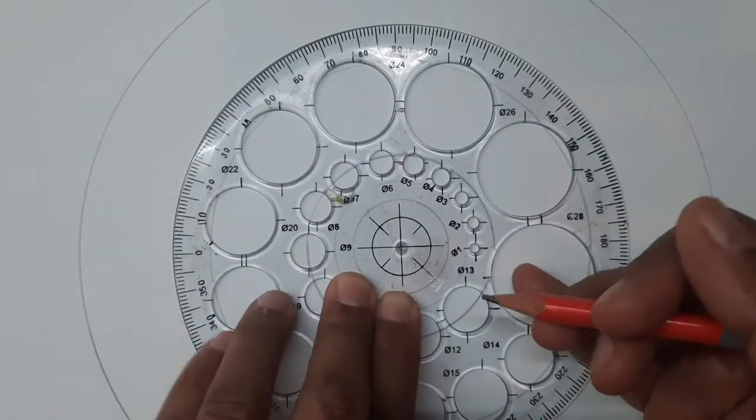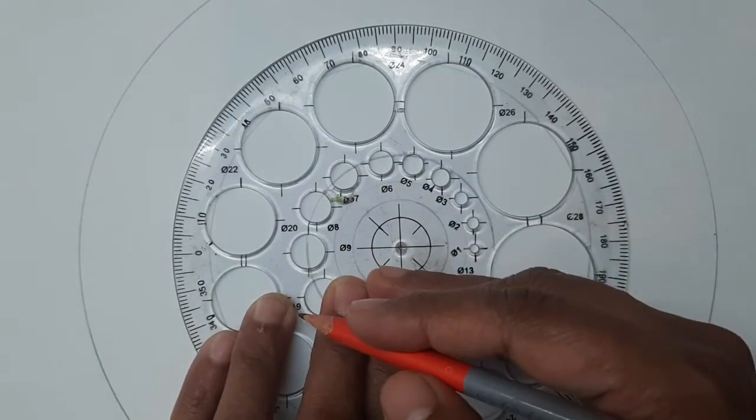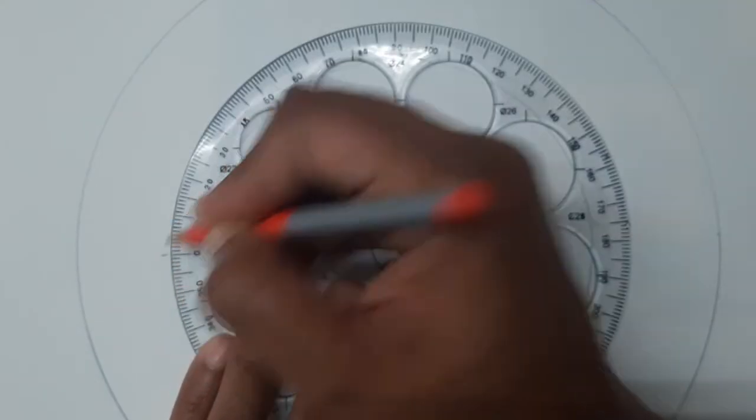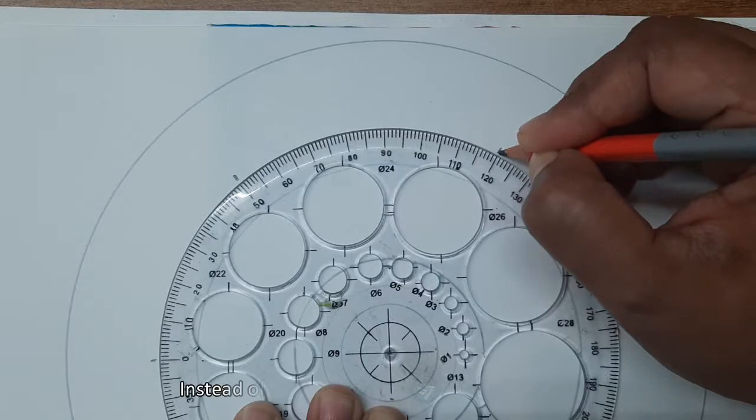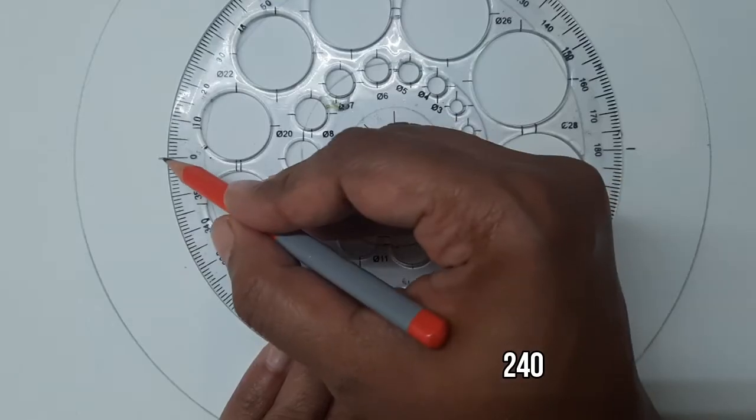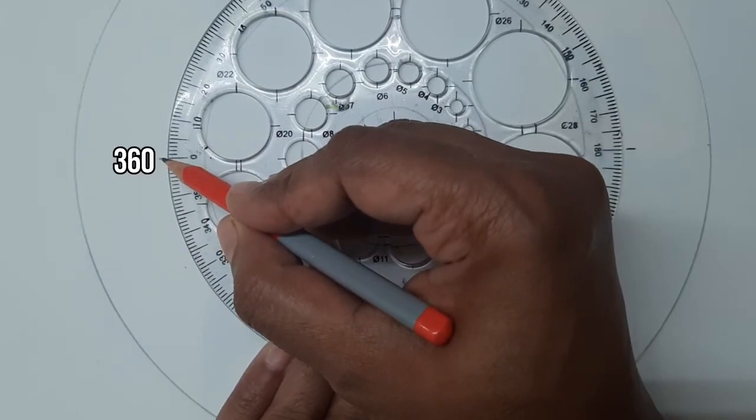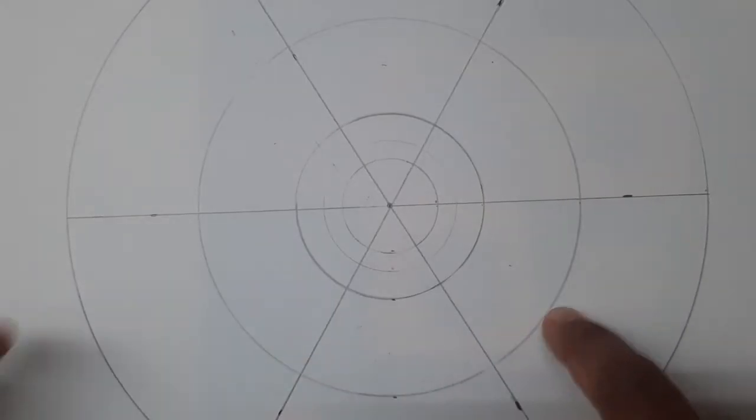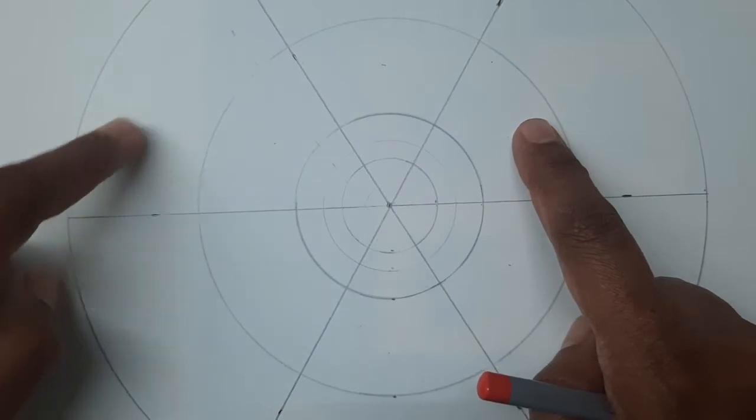We are going to mark degrees every 60, so start with 0, 60, 120, 180, 240, 300, 360. Zero and 360 fall at the same place. I've connected the dots and there are six subdivisions now, three here and three here.